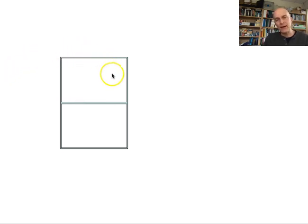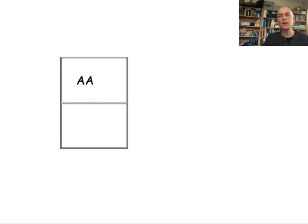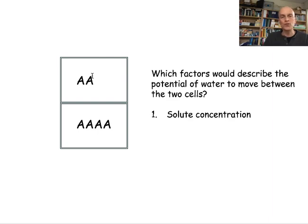In this example, we have two boxes representing two cells that are adjacent to each other. The question is which factors describe the potential of water to move between these two cells. If we look at solutes — indicated by the letter A — the concentration of solutes in the lower cell is greater than in the upper cell. Solute concentration influences water movement because in osmosis, water always moves to the more concentrated solution.